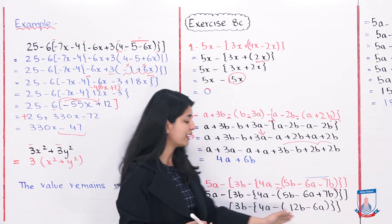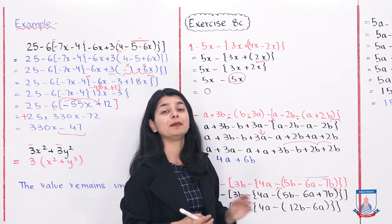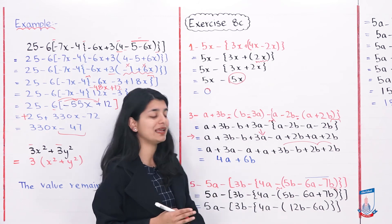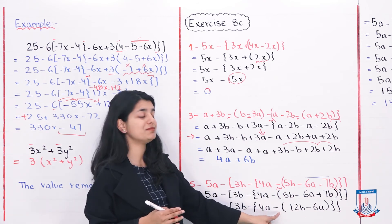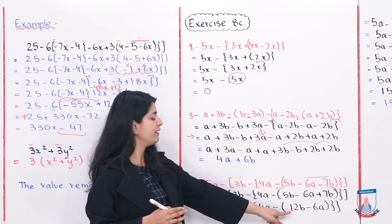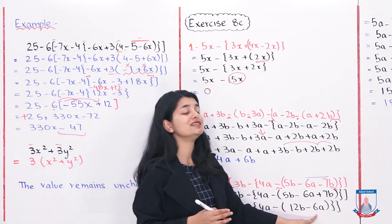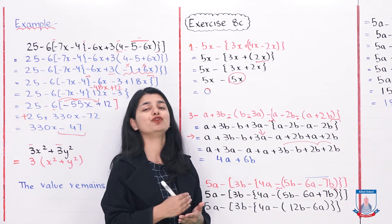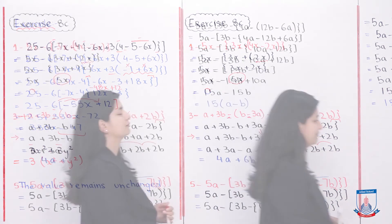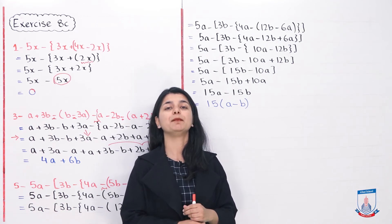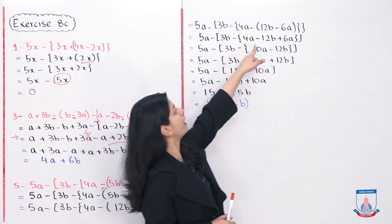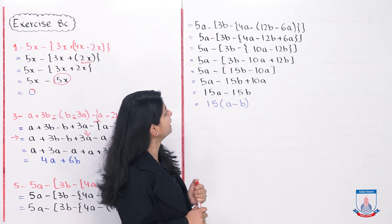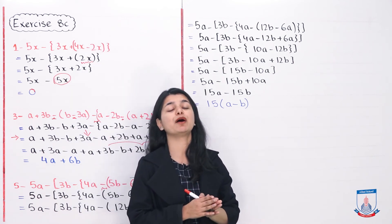This is the simplified form. My next step is to bring 12b and 6a out of the parentheses. Outside is a minus sign, so I multiply both by minus: 12b which is positive becomes minus 12b, and 6a which is negative becomes plus 6a. Everything else remains as it is. So after opening the parentheses, 12b minus 6a becomes minus 12b plus 6a, and now our remaining brackets are the braces and the outer square bracket.